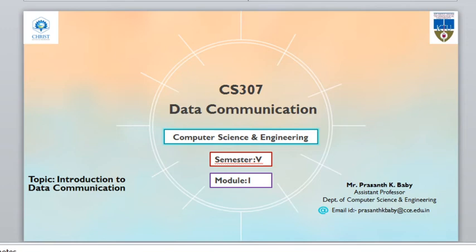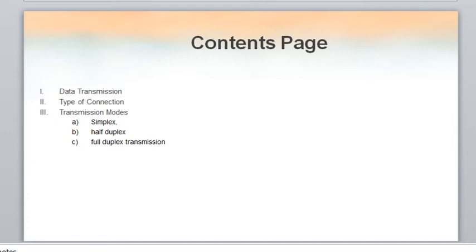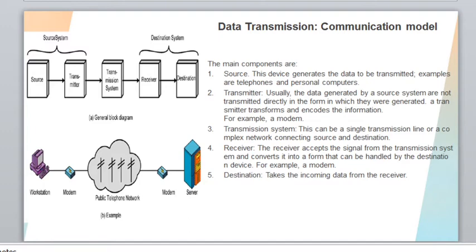In this video we are discussing the introduction to data communication, including data transmission, types of connection, various transmission modes, and the basic communication model. In a basic communication model there are five components: source, transmitter, transmission media, receiver, and destination. The source is a device which generates the data to be transmitted — that data we can call raw data — and examples for such devices are telephones and personal computers.